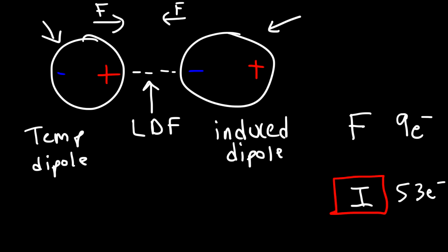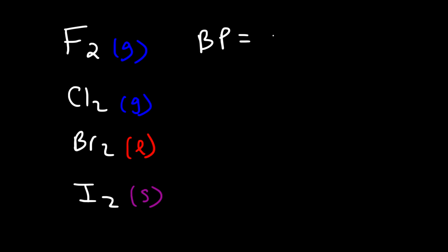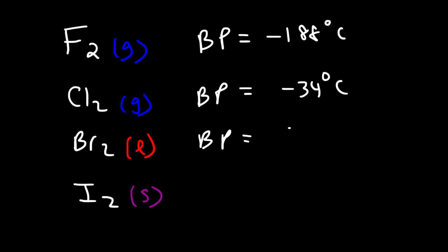These Van der Waals forces explain why some nonpolar molecules have higher boiling points than other nonpolar molecules. Let's consider the halogens: fluorine, chlorine, bromine, and iodine. Fluorine is a gas, chlorine is a gas, bromine is a red liquid, and iodine is a purple solid at room temperature. The boiling point of fluorine is -188°C, chlorine is -34°C, bromine is 59°C, and iodine is even higher at 114°C.